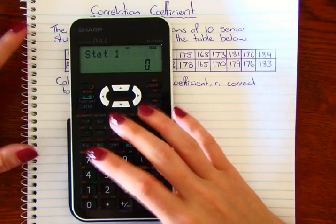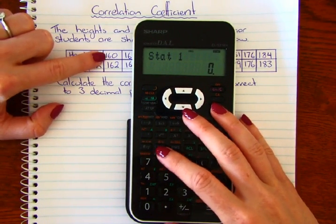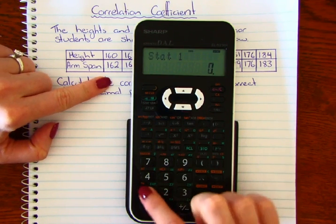Alright, so now we need to start entering our data. So we want to enter it all in pairs. So for this first one, their height is 160, their arm spans 162. So we're going to write 160.